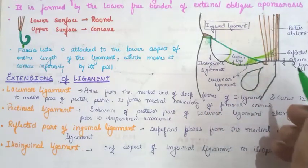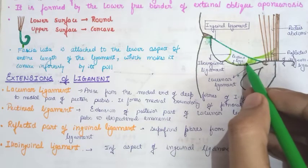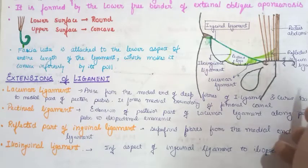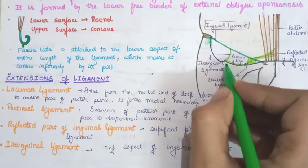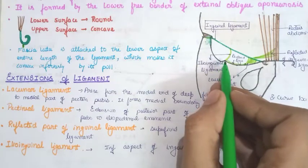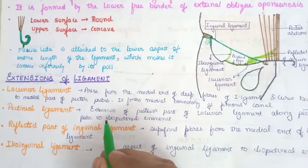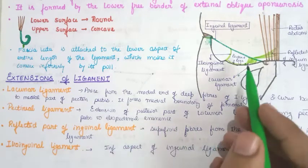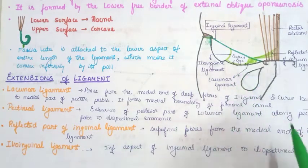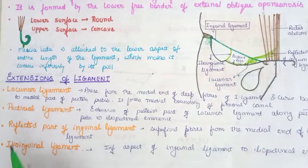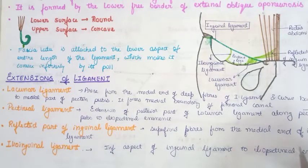The pectineal ligament extends from the posterior part of the lacunar ligament along the pecten pubis to the iliopectineal eminence, as seen in the diagram. The ilioinguinal ligament is the last remaining extension. It arises from the inferior aspect of the inguinal ligament to the iliopectineal eminence.